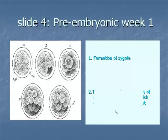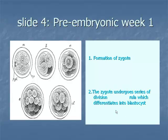Item 2: the ciliary action of the uterine tube transfers the zygote to the uterus, during which it undergoes a series of mitotic divisions and transforms into a ball of small cells termed blastomeres. By the time they reach the uterus in approximately 3 days, the blastomeres become a morula — a ball of 16 cells after 4 mitotic divisions — and begin to form an internal cavity to form a blastocyst.